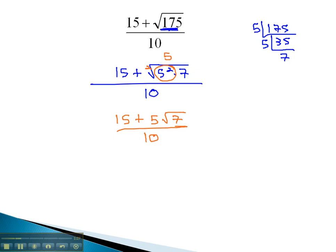Now we can focus on simplifying the fraction. Before we can reduce the fraction, we must first factor the numerator. The numerator has a common factor of 5, leaving behind 3 plus the square root of 7 over 10.